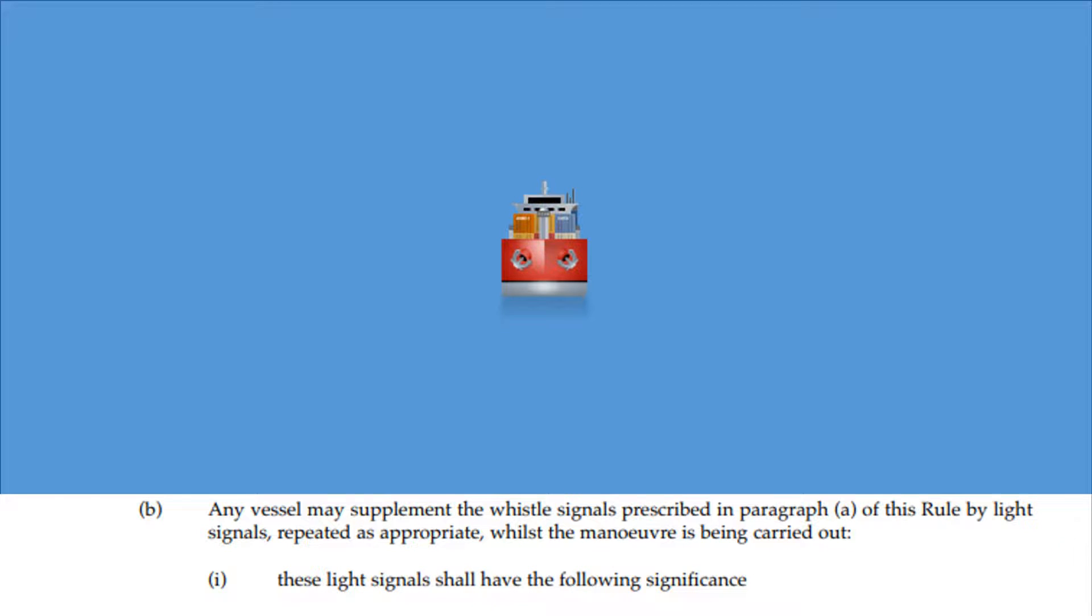Any vessel may supplement the whistle signals prescribed in paragraph A of this rule by light signals, repeated as appropriate, whilst the maneuver is being carried out. These light signals shall have the following significance.